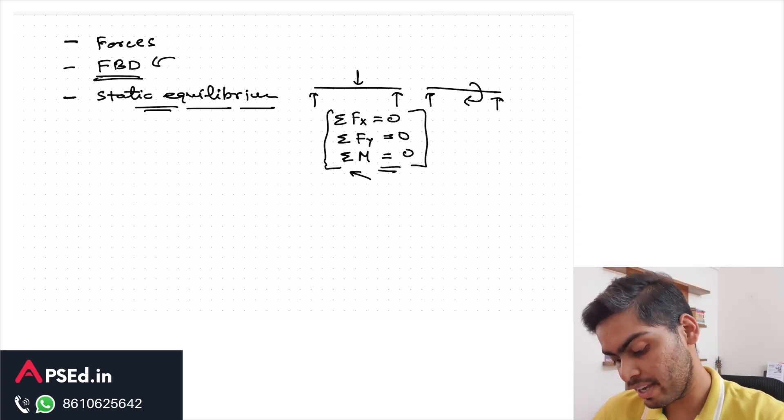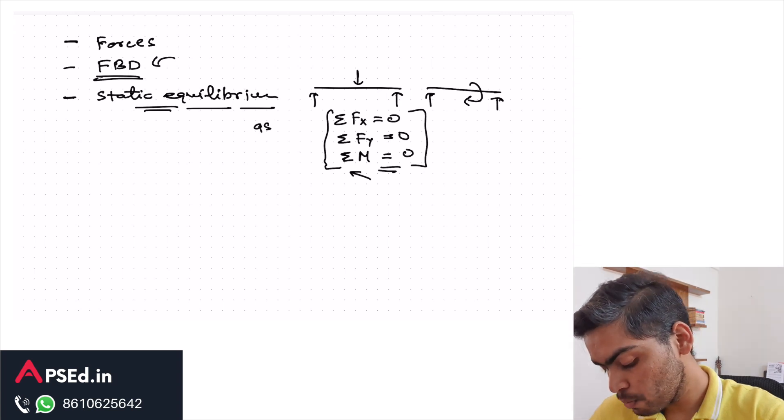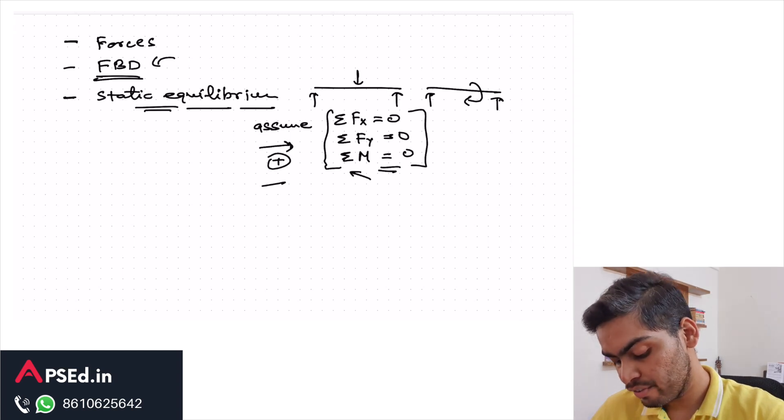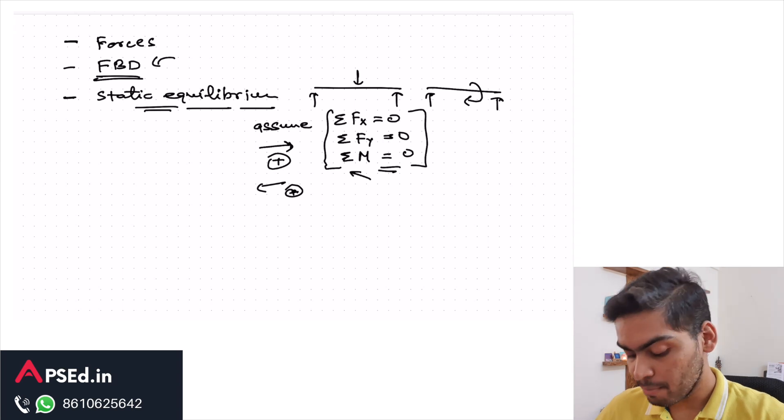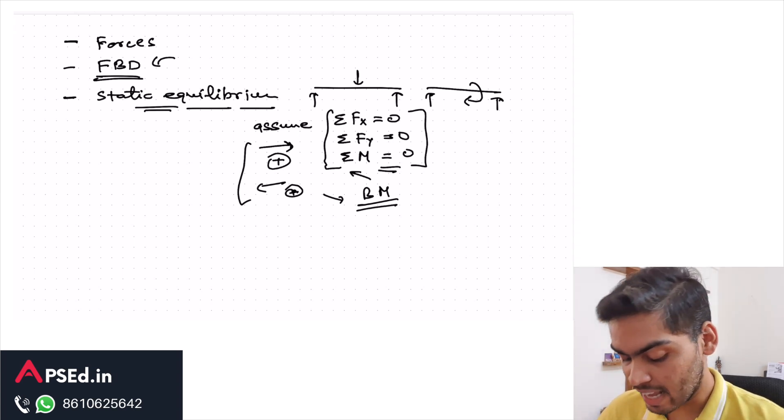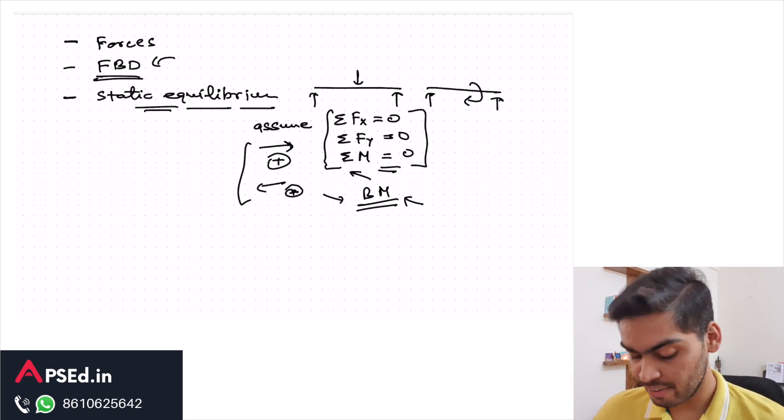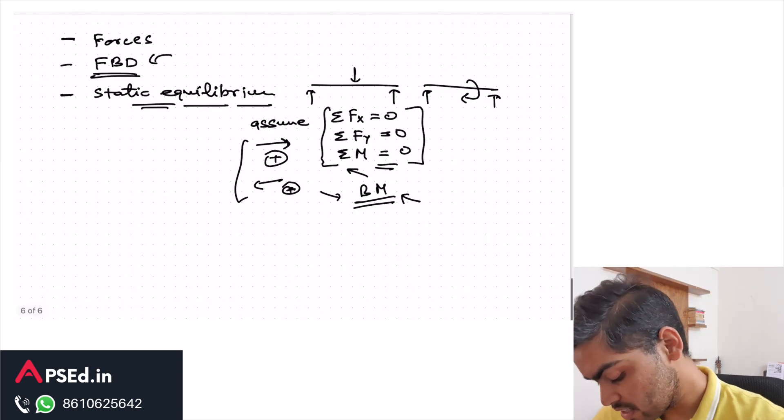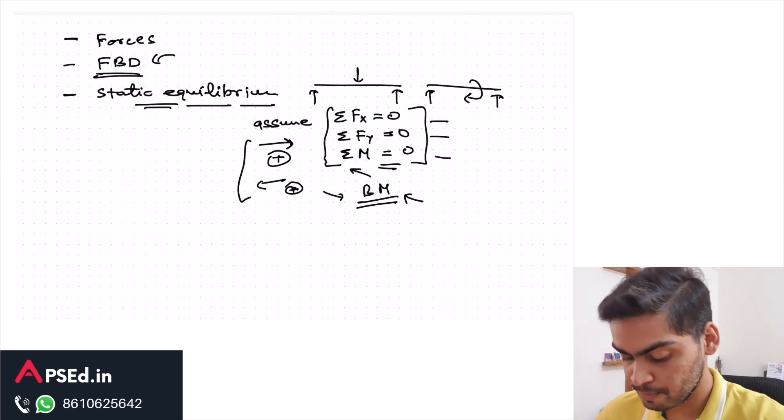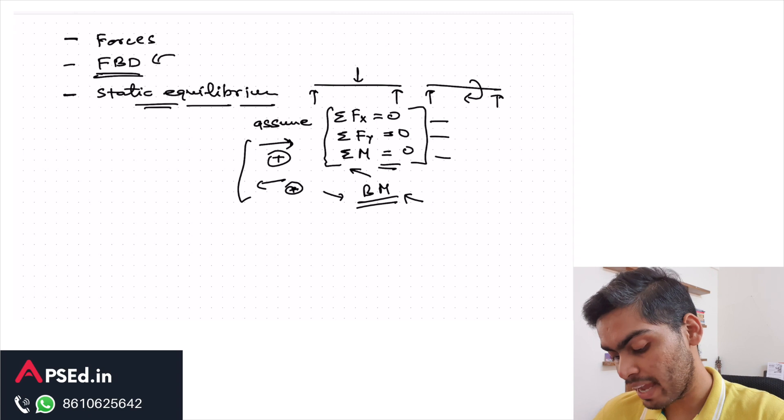The understanding should be very thorough. Another thing that I can tell you here is that when we write the static equilibrium equations, we assume the direction. In any question, if you choose rightward as positive or leftward as positive, it does not matter. It might confuse you when this same idea is mixed with bending moment. You need to have better clarity and understand the difference between the two. In case of bending moment, we are more particular with the sign convention, but that is not the case when we talk just about the static equilibrium equations. These are the very fundamental topics from the mechanics part.